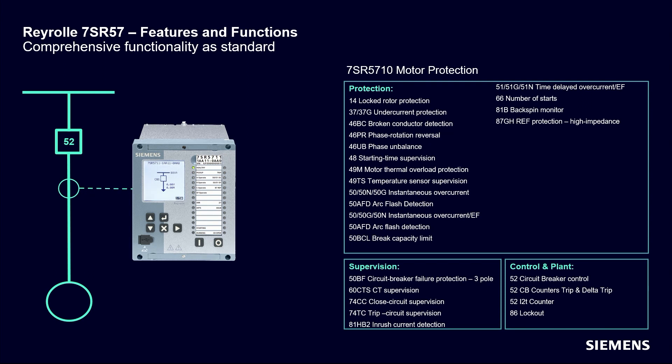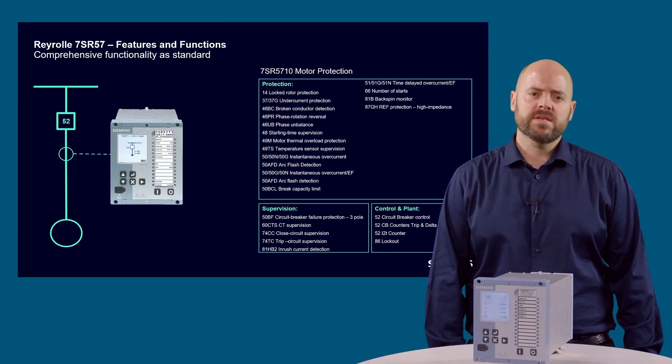Motor starting can be inhibited when the user-defined limit is reached. To complete the scheme application, the device has the option for direct arc flash detection inputs with high-speed tripping contacts for fast clearance when arc faults are detected in enclosed switchgear, and temperature sensor inputs for connection to sensors located in the motor installation.